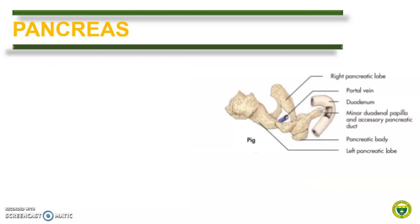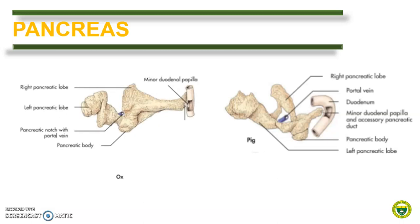In pigs, the pancreas has a large body and left lobe with a small right lobe. In ruminants, it is irregular to quadrilateral in shape, and the right lobe is larger than the left.